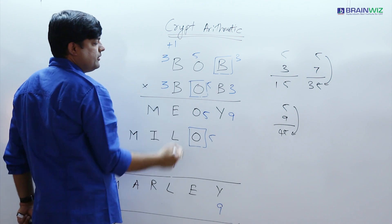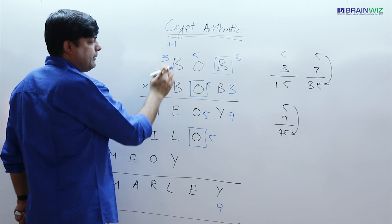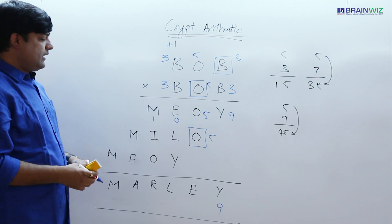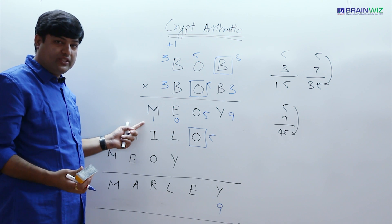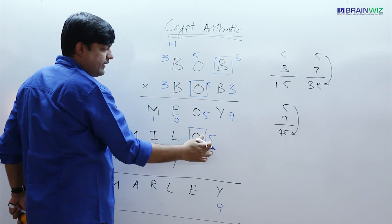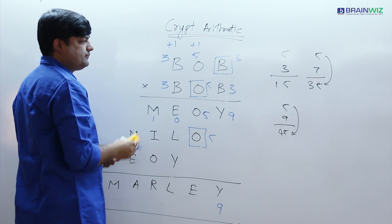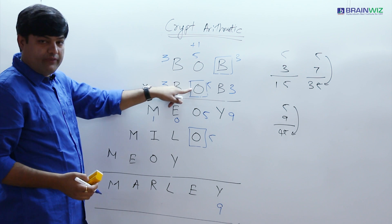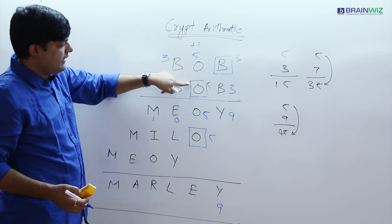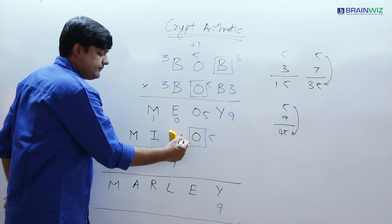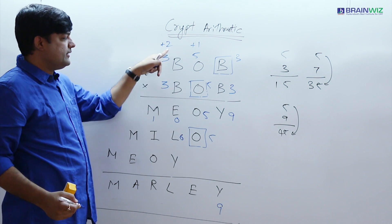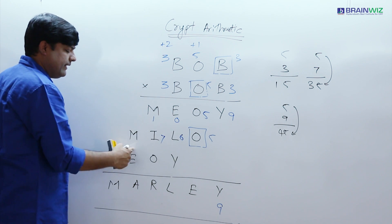The carrying 1 has to be here. 3 × 3 = 9 plus 1 = 10, so E value is 0 and M value is 1. Till now we have no contradictions. Now moving forward: 5 × 3 = 15, so 5 here and 1 carrying. Then 5 × 5 = 25 plus 1 = 26, so L value is 6 with 2 carrying. Then 5 × 3 = 15 plus 2 = 17, so I value is 7 and M value is 1.